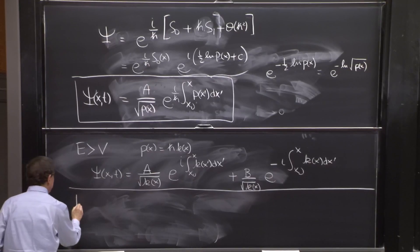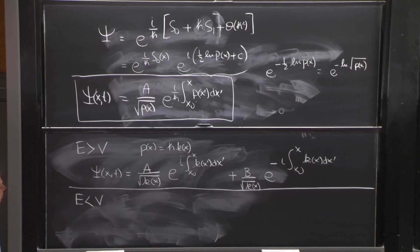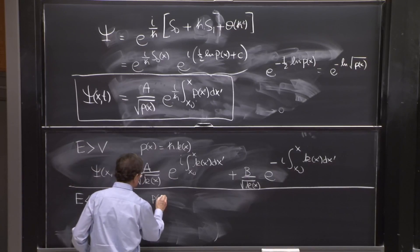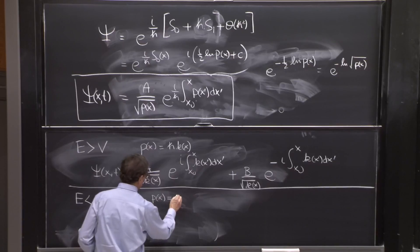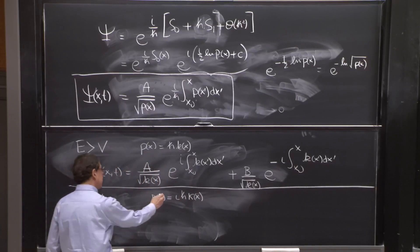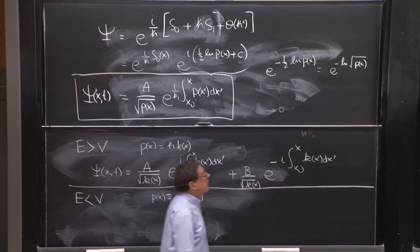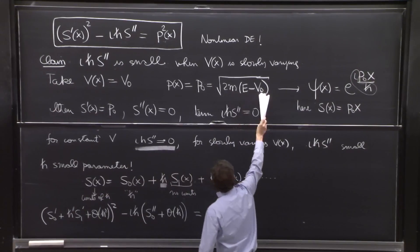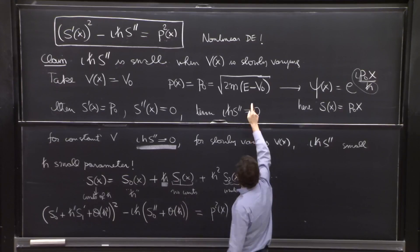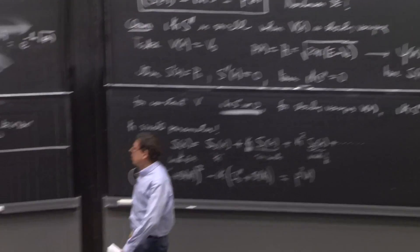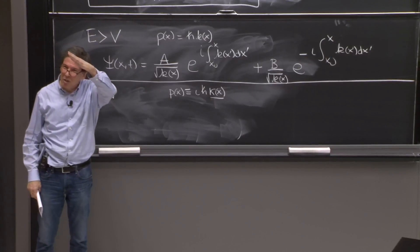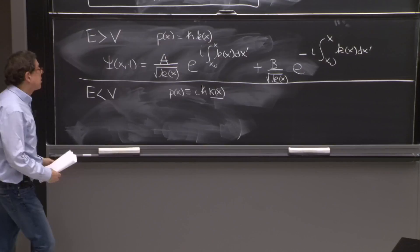If we have e less than v, we still have a solution. And we said that p of x, in that case, would be equal to i h bar kappa of x. We use that notation. If e is less than v, this is a negative number. So p of x is i times some positive number, a square root of a positive number. And we called it kappa last time. So this is the letter we usually use for spatial dependence in regions where the wave function decays exponentially, which is what is going to happen here.